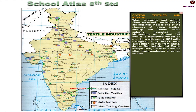India is one of the pioneers of cotton textiles. Initially, the cotton textile industry flourished in Maharashtra and Gujarat. But now it is distributed almost all over India with nearly 1,600 mills throughout the country.